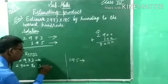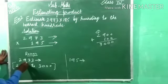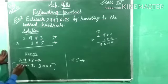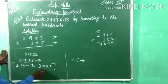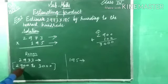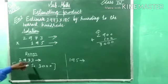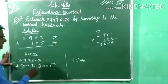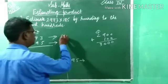So 2,900 rounds to 3,000. Look at 2,973 — does it get nearest to 2,900 or 3,000? This number gets nearest to 3,000. So write 3,000 here.